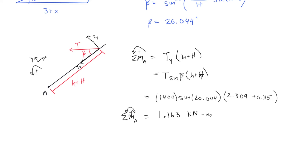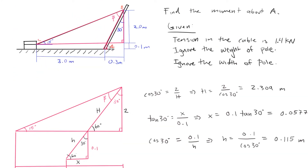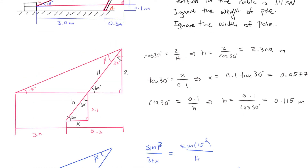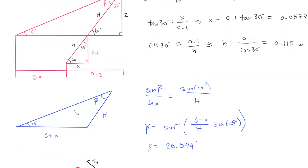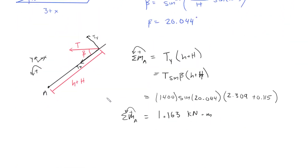A quick recap: we defined the geometry of this problem keeping in mind the 0.1-meter offset, and solved for all dimensions needed — specifically angle beta and the length at which the tension force acts on point A. We used the law of sines to find beta, drew our free body diagram, split the tension force into x and y components, and computed the scalar moment about A, getting 1.163 kilonewton meters.